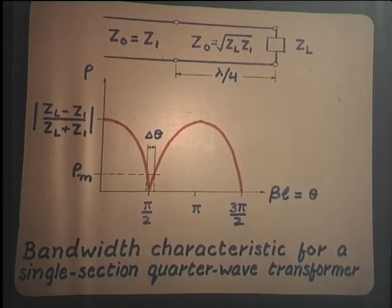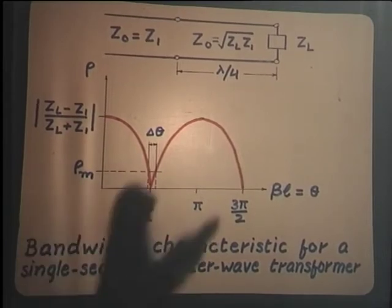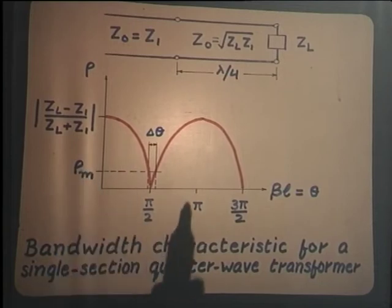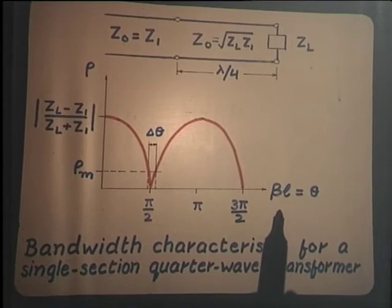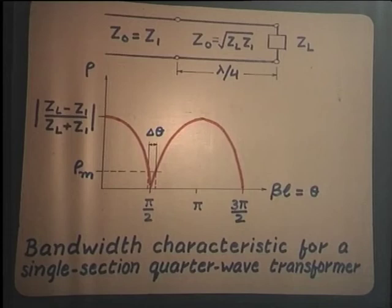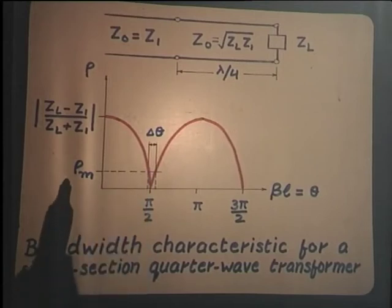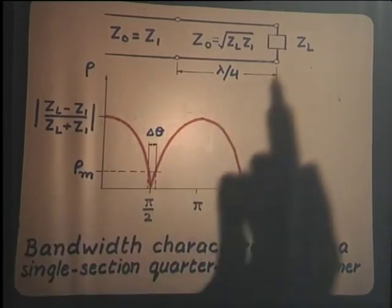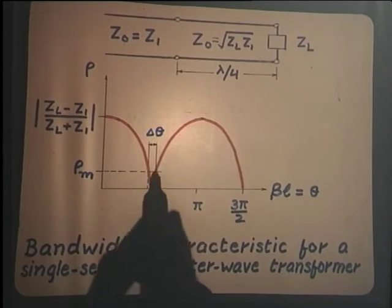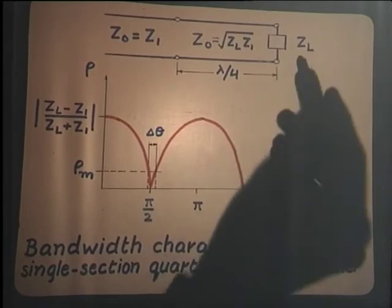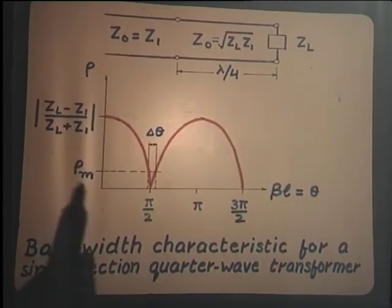To relate this to bandwidth: at the design frequency the match is perfect. As we deviate on either side — because the operating frequency changes — the reflection coefficient increases rather steeply. Up to a certain point where the reflection coefficient stays below the maximum permissible value ρ_m (typically 0.1 or 0.2 depending on the application), the load can be considered matched. The upper and lower frequency limits define the bandwidth over which this quarter-wave section keeps the load matched within the specified reflection coefficient limits.